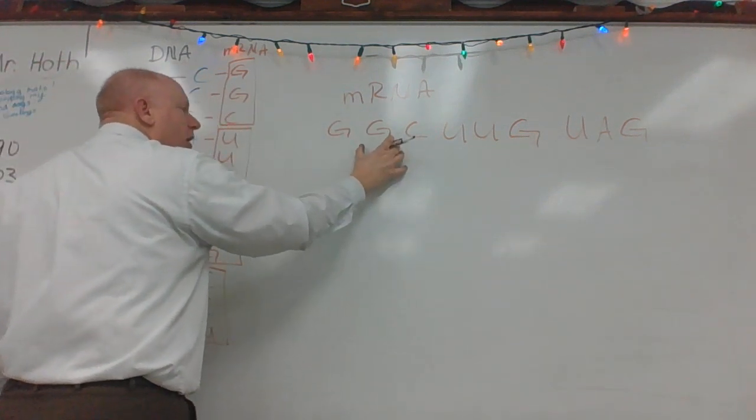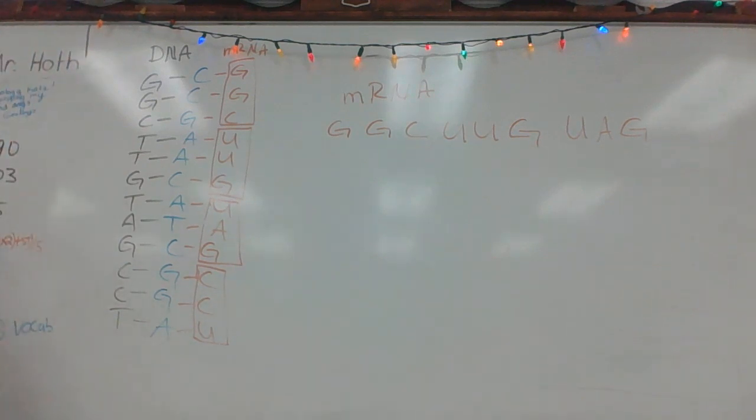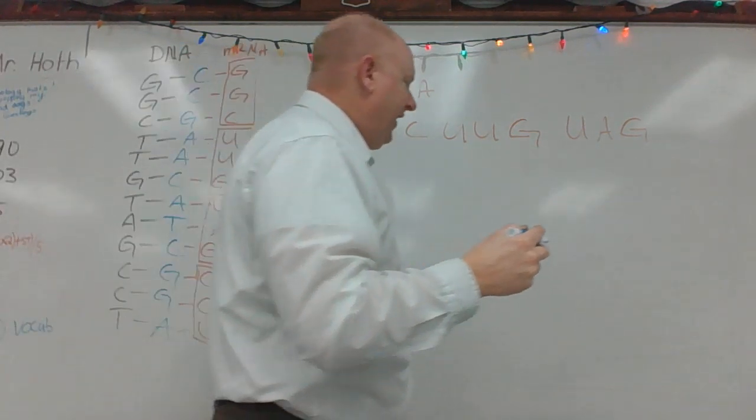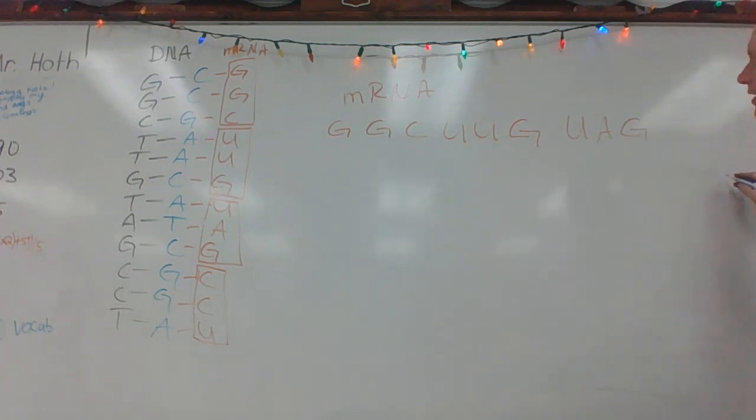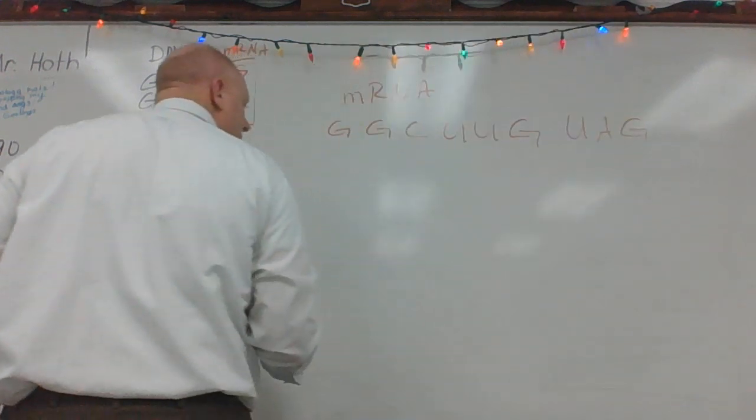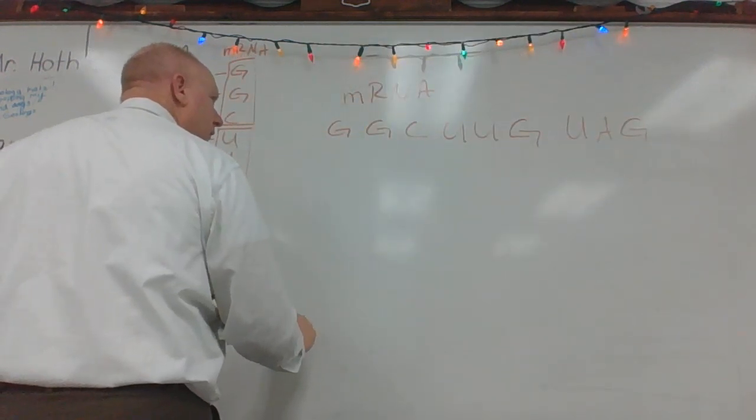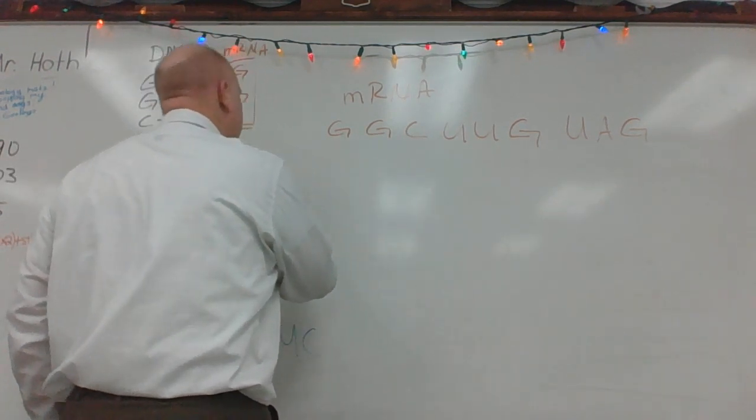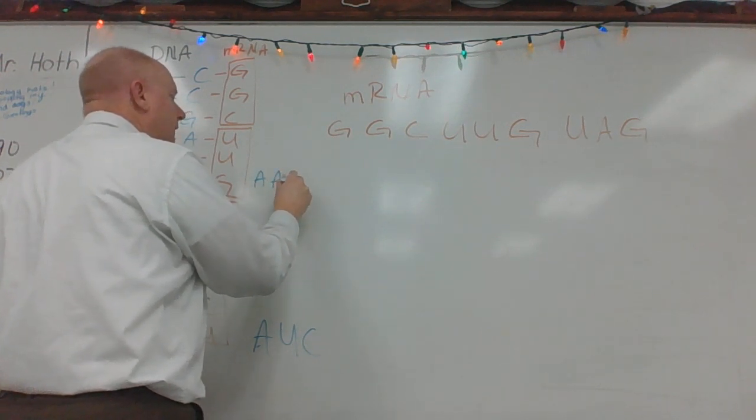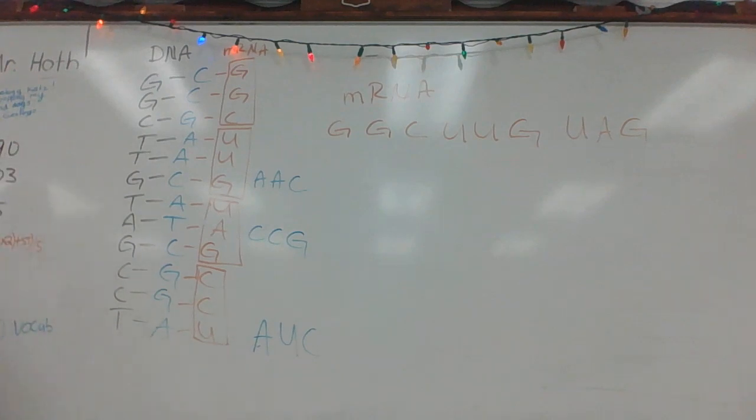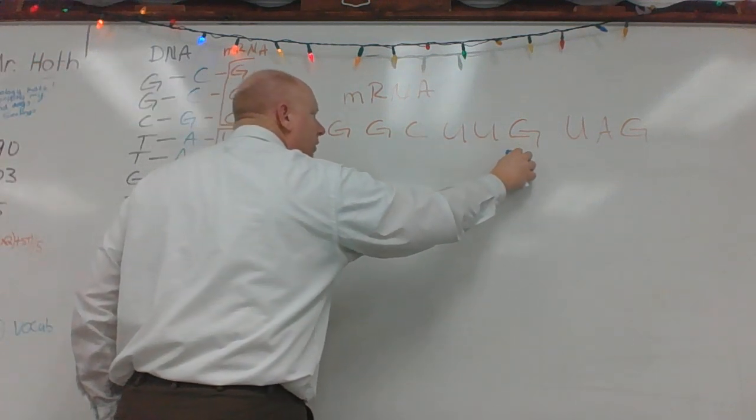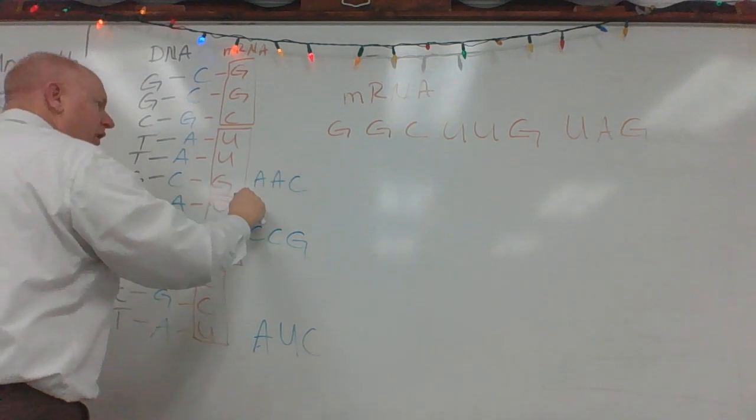Three-letter bases of messenger RNA are called codons, where a third type, transfer RNA, will physically pick up these amino acids that is coded for. So in this case, we'll just put some random ones up here, so we can put them in an order. Those are three different amino acids that physically get picked up by transfer RNA. It picks up that amino acid and assembles it in this specific order. These are what we call anti-codons.